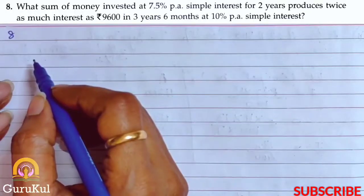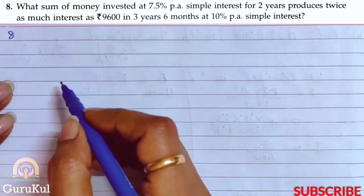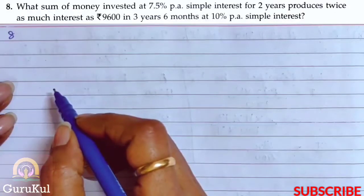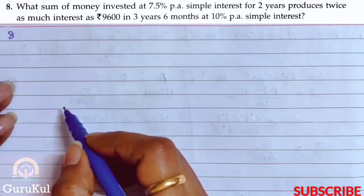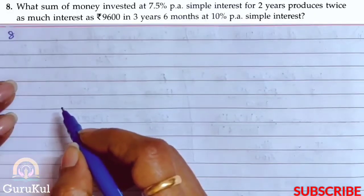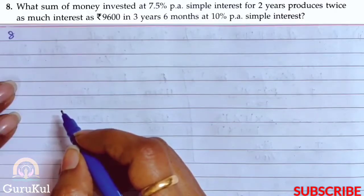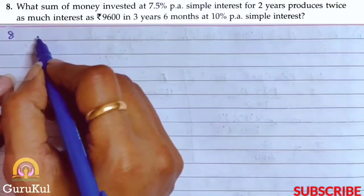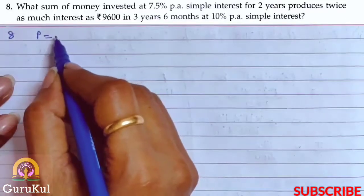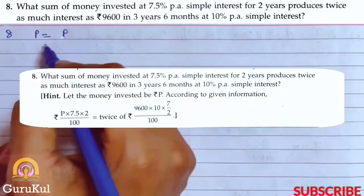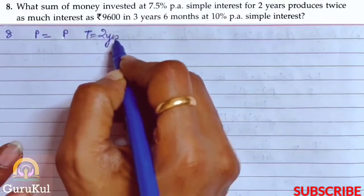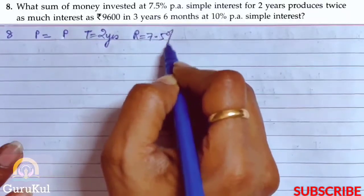Question number 8. What sum of money invested at 7.5 percent per annum simple interest for 2 years produces twice as much interest as Rs. 9,600 in 3 years 6 months at 10 percent per annum simple interest? So here two different sums are given with their respective time and rate. In the first case, P is unknown, which we have to find — let the money invested be Rs. P. Time = 2 years, Rate = 7.5 percent.